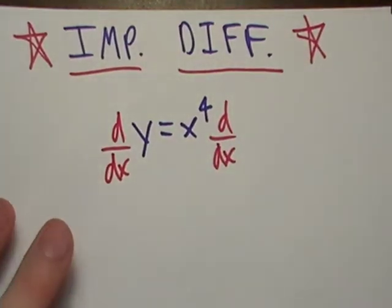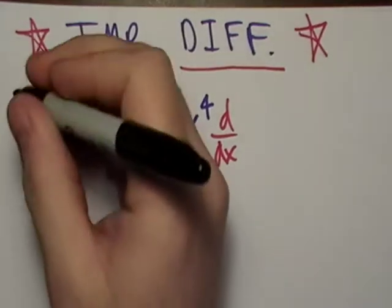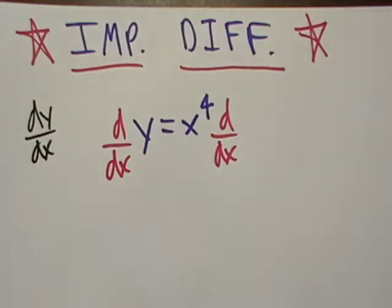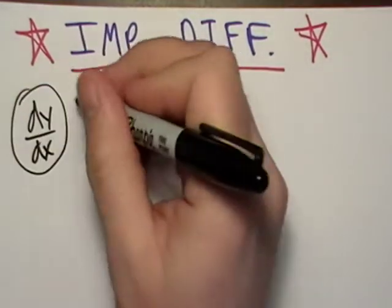Okay, so we're taking the derivative of both sides. And if I take the derivative of both sides, and here's what I want. I want dy/dx, don't I? That's what I want.